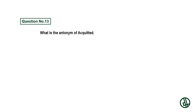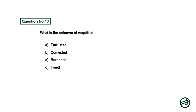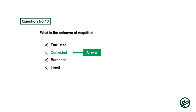Question number thirteen: What is the antonym of 'acquitted'? Option A: entrusted. Option B: convicted. Option C: burdened. Option D: freed. Answer is option B: convicted.